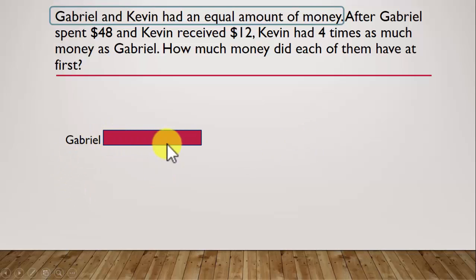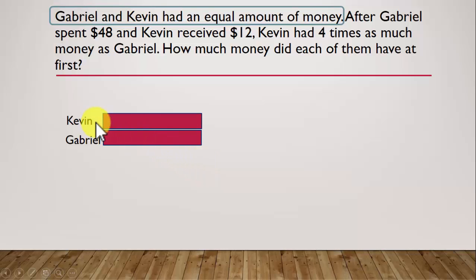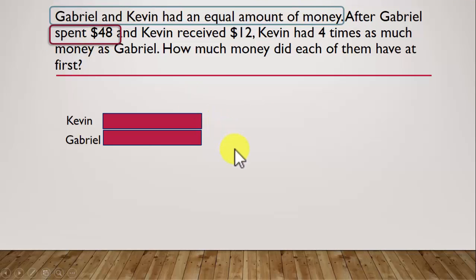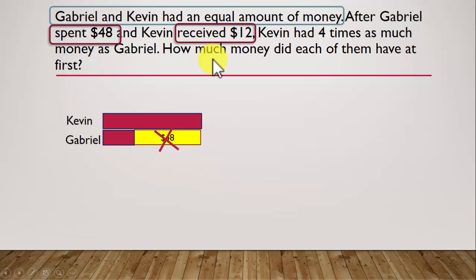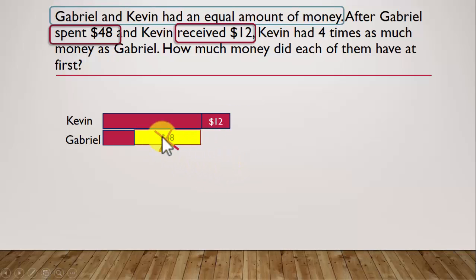Gabriel's money is represented by one box. Kevin, because he has an equal amount of money, is represented by another box of the same size. We see that after Gabriel spent $48, this $48 is gone from Gabriel. And Kevin received $12, so in addition to whatever money Kevin had, he is receiving another $12 which is with him now. This $48 is not with Gabriel — he has spent it.